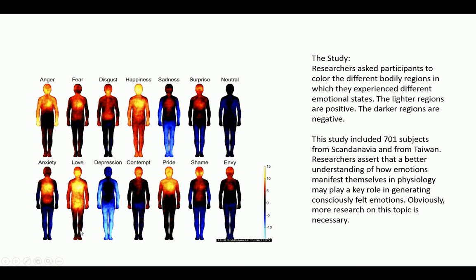We can have a gut feeling about things as well. We can also have a stimulated response in our extremities — in the hands or the feet. You notice too, in anger, how much the fists are lit up as an activity center. All of those things really indicate kind of where emotions are felt.